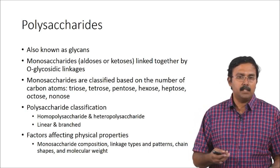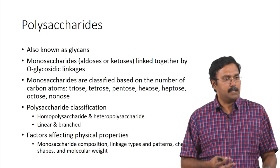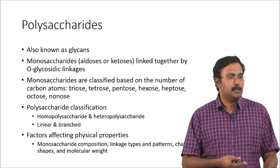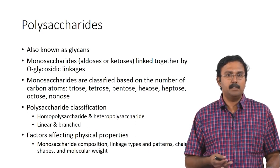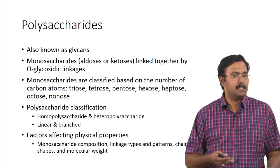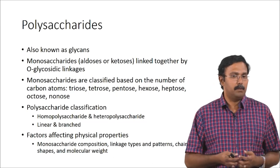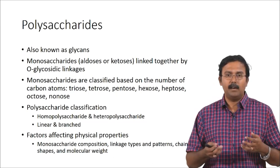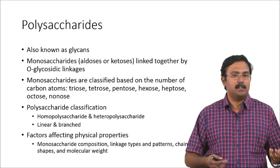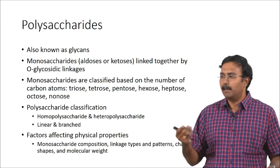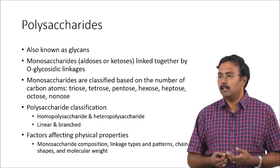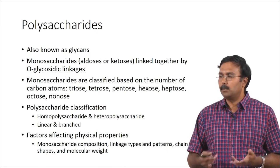There are different factors which affect the physical properties of a polysaccharide — the monosaccharide composition, linkage types and patterns, chain shapes like linear or branched, and the molecular weight of the material itself. These polysaccharides can range from maybe 40 or 50 kilodaltons all the way to a few megadaltons, and based on that kind of range, many physical properties will change.